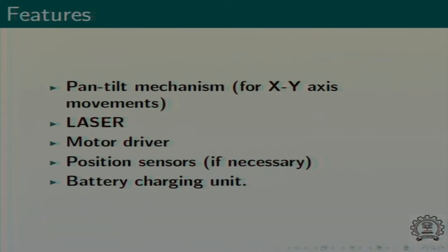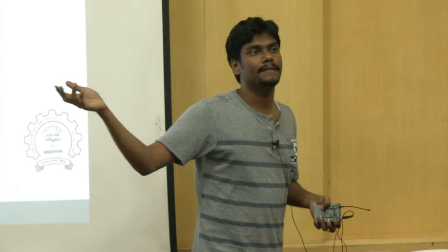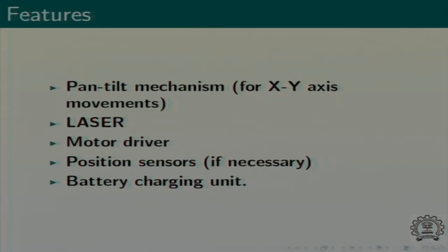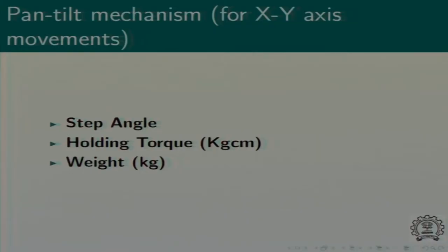Of course we need a laser — a good quality, moderately powered laser. Then we have motor drivers; depending on what motors you choose, we would need specific motor drivers. Then position sensors, if you want to make it closed loop — to verify whether the laser is pointing in the right direction. I'm talking about night skies in an open field, so from where would you get power? You can't use solar panels — it's a night sky, there's no sun. So you need a battery with proper battery backup. The pan-tilt mechanism is governed by the motor you're going to use, so step angle is very important.